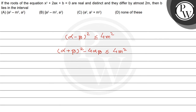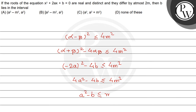Solving the left-hand side: (alpha − beta)² = (alpha + beta)² − 4·alpha·beta. Substituting alpha + beta = −2a and alpha·beta = b, we get (−2a)² − 4b ≤ 4m², which gives 4a² − 4b ≤ 4m². Dividing by 4: a² − b ≤ m², so a² − m² ≤ b. This is equation 1.